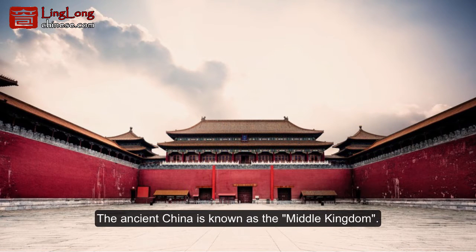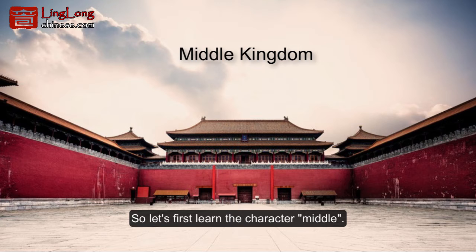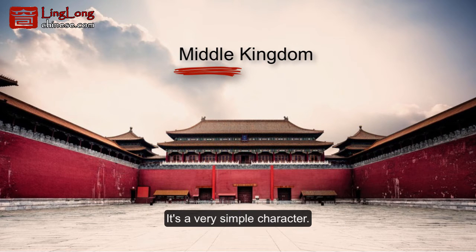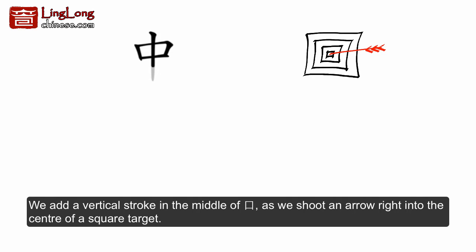Ancient China is known as the Middle Kingdom. So let's first learn the character for 'middle.' It's a very simple character — we add a vertical stroke in the middle, as if shooting an arrow right into the center of a square target.